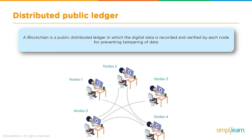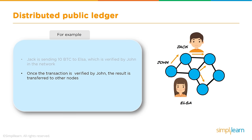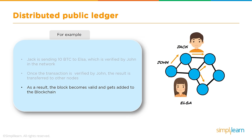A blockchain is a distributed ledger where digital data is recorded and verified by each node to prevent tampering. Some nodes are miners who take responsibility for verifying and validating transactions on each block and are rewarded for doing so. For example, Jack sends 10 BTCs to Elsa, verified by miner John. Once John verifies, the result is broadcast to other nodes, the block becomes valid, is added to the blockchain, and all ledgers record the transaction.